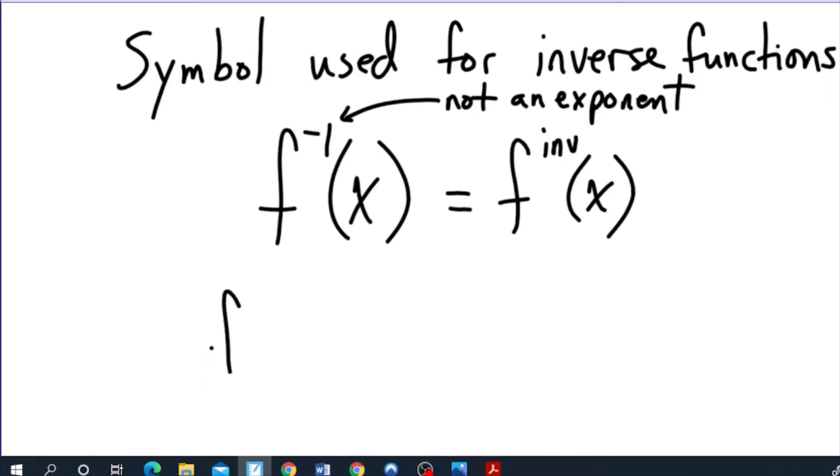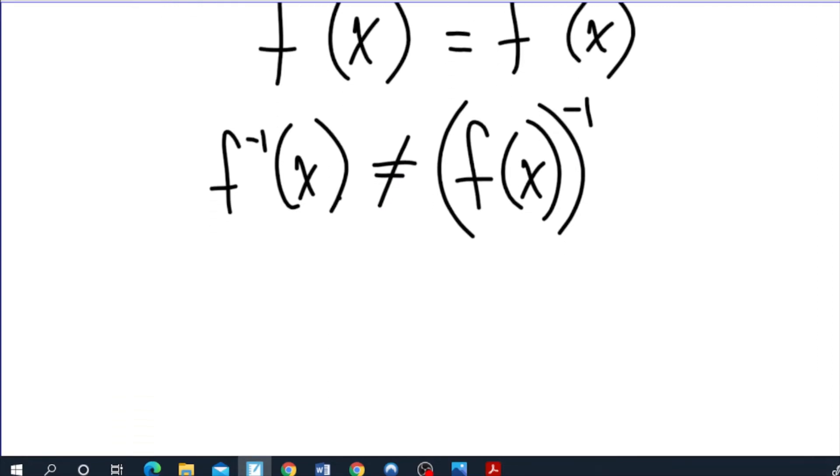So for instance, if I wrote these two next to each other, they are not equal to each other. As soon as the negative 1 is taken to the outside of the function, this particular one would be 1 over f of x because that here is an exponent. It's affecting the entire function. But here, the symbol is telling you that this is the inverse of the function f of x. In which case, you'd have to switch the x and the y positions and do the work that I just showed on the previous slide.